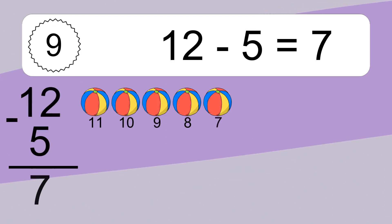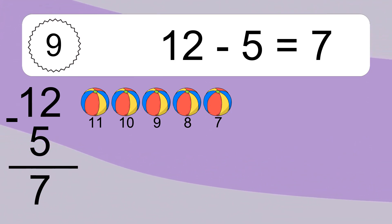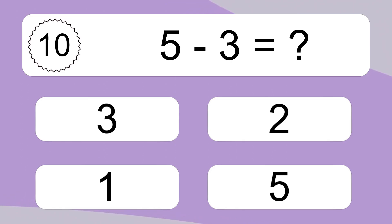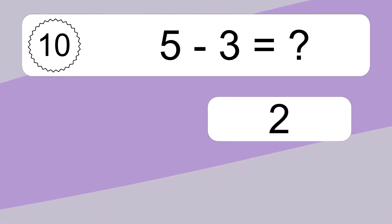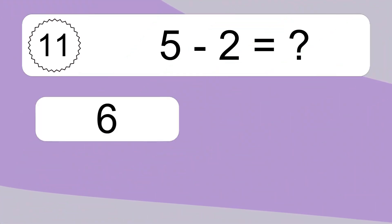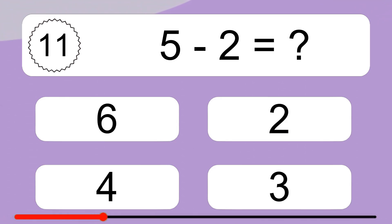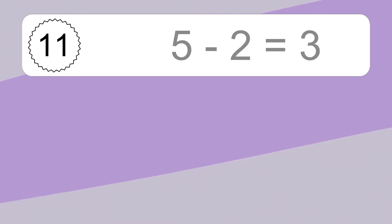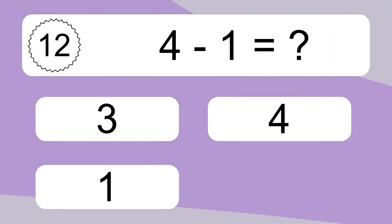12 minus 5 equals 7. Let's count it. 11, 10, 9, 8, 7. 5 minus 3 equals what? 5 minus 3 equals 2. Let's count it. 4, 3, 2. 5 minus 2 equals what? 5 minus 2 equals 3. Let's count it. 4, 3.